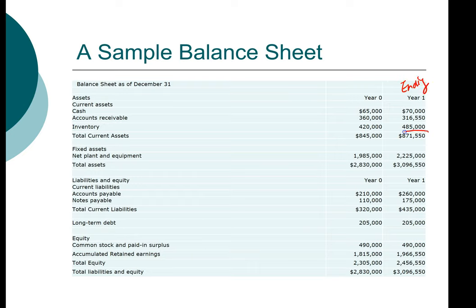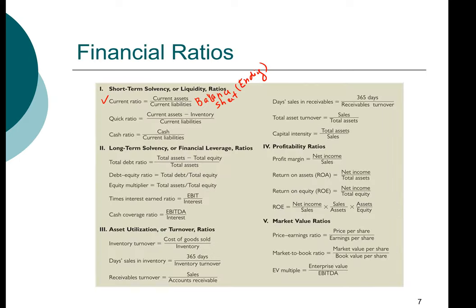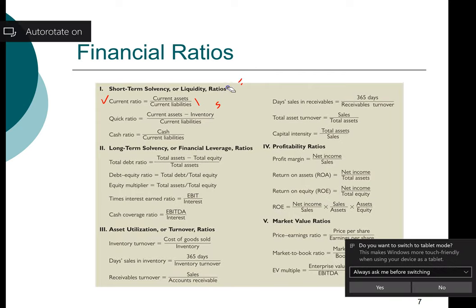Ending means year one. We need current asset, which is $871,550. And then we need total current liability, which is $435,000.